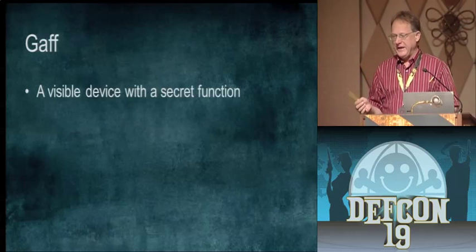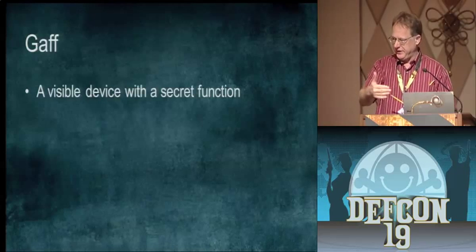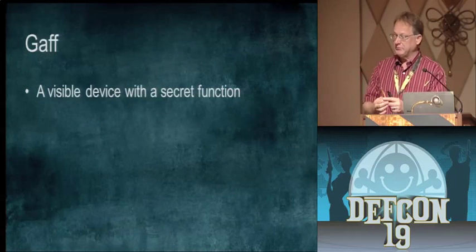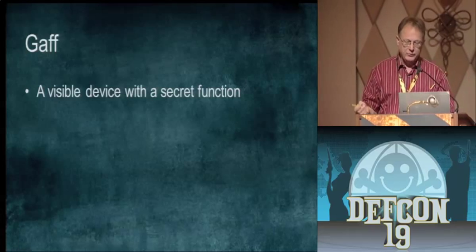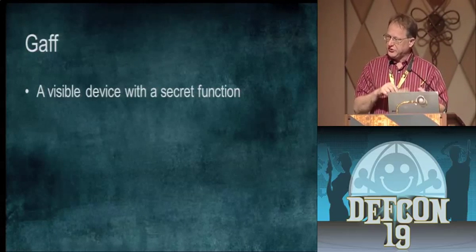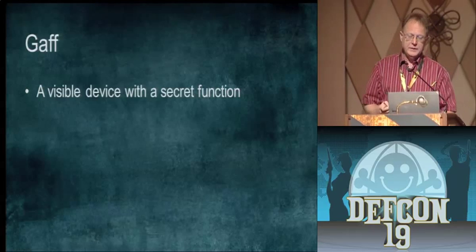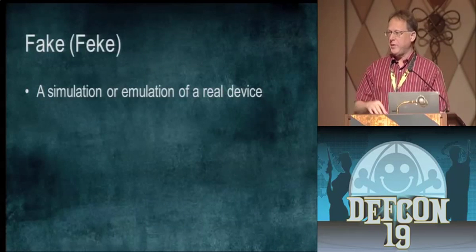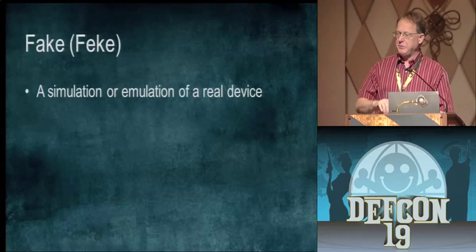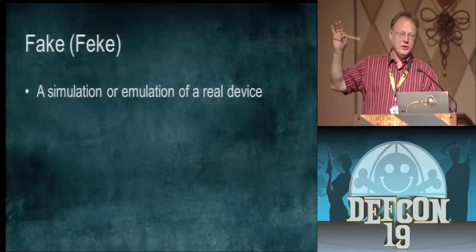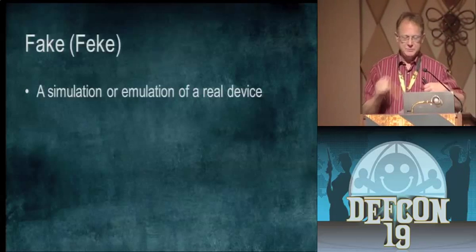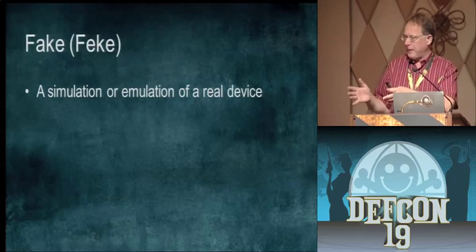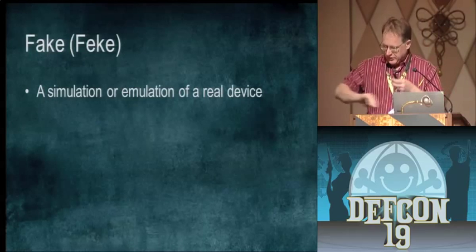The next thing is a gaff — a device that you see and has a function you're aware of, but it's been modified. If I take a pencil and stick a magnet or a thread on it, it becomes a gaffed pencil. The equivalent in hacking is a backdoor or an Easter egg function in some software. The third type of object is a fake — like a rubber tube painted yellow with an eraser on it that looks like a pencil but isn't. The hacking equivalent is a Trojan horse or a man-in-the-middle: it's not really the website you're going to; it's just pretending to be.